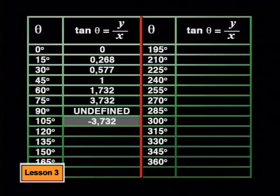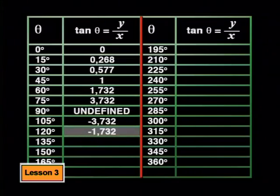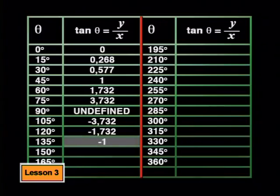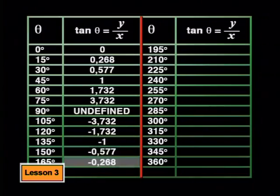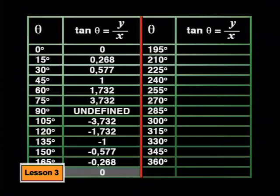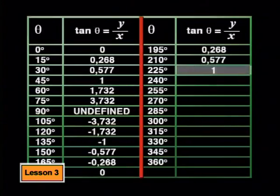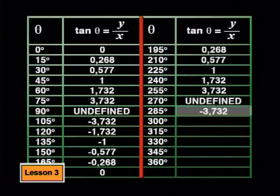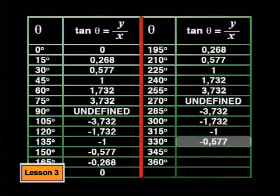We get negative 3.732 at 105 degrees, negative 1.732 for 120 degrees, negative 1 for 135 degrees, and 0 for 180 degrees. We can continue putting all these values into our table until we finish here at 360 degrees. Now, we have all the values for tan theta in the table.